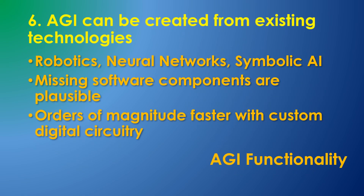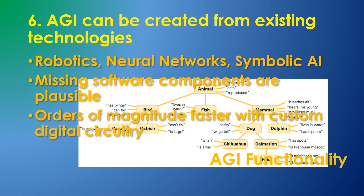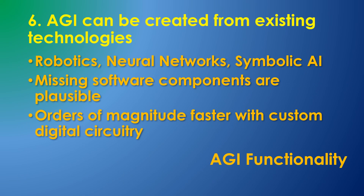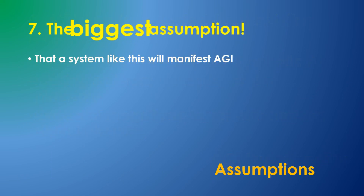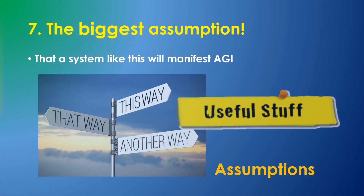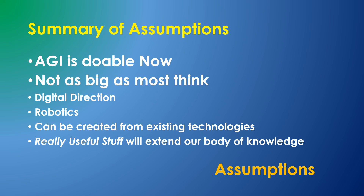Assumption 6: Many of these design ideas are adaptations of existing technologies, and I assume that large portions of AGI can be adapted from available software. Number 7: Of course, the biggest assumption is that a system built with the following components will actually display intelligence. No one knows. But as you review the system I'm describing, you'll see I intend to create some capabilities absent in current systems, and at the very least to create some really useful stuff and extend our body of knowledge about the nature and limitations of intelligence and computation. My overall assumption: AGI is doable and is not as big a project as most people think.